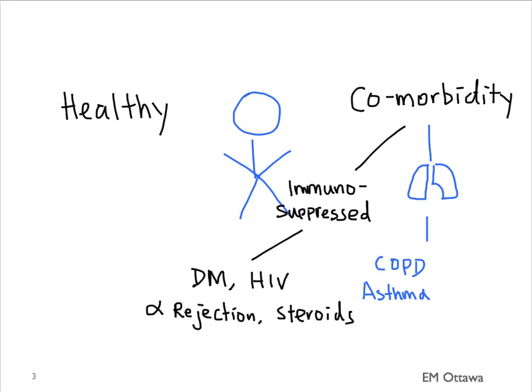Lastly, we want to know if the patient is at higher risk for aspiration. Those patients include those with neurological conditions, such as seizures and strokes. Knowing who the patient is is important, since the organisms infecting the patient will be different based on what the patient is like.